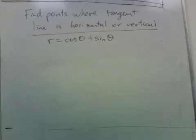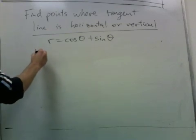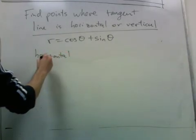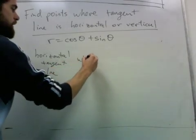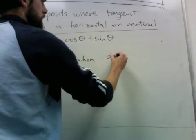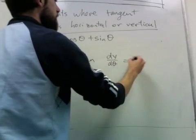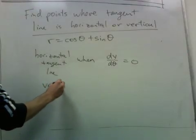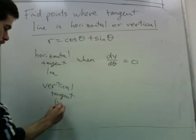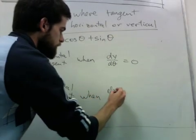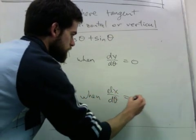In this problem, let's try to find the points where the tangent line is horizontal or vertical. Recall from parametric equations: we have a horizontal tangent line when dy/dθ equals zero, and a vertical tangent line when dx/dθ equals zero.